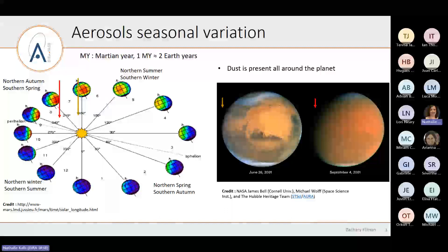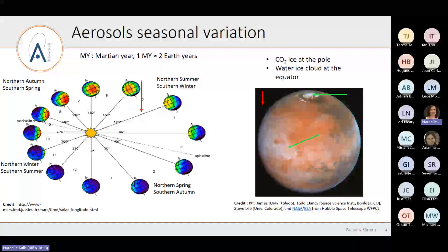Global dust storms happen in the perihelion when the atmosphere is quite warm. Smaller ones happen every Martian year during the perihelion season. When you are at aphelion, around LS 120 degrees, Mars looks more like this — you can see clouds running along the equator which are ice clouds, and also some CO2 ice present at the pole. All these ice features are more present in the aphelion when it's colder, depending strongly on the season. There is a lot of variation we need to take into account in our observations.